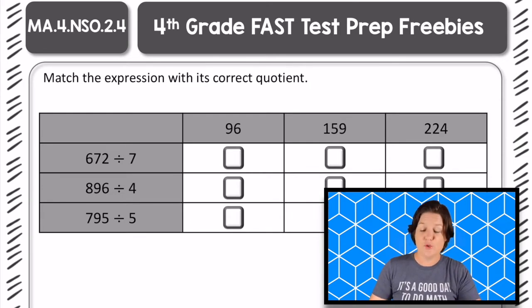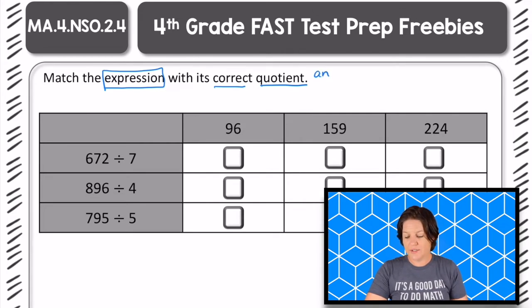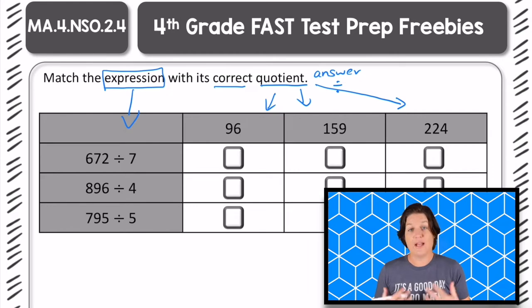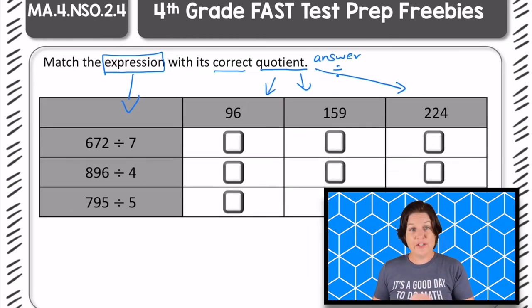Let's go ahead and go over this problem. So it says to match the expression with its correct quotient. So the quotient is the answer when we're using division, and those quotients can be found down here, and we're matching it with the expression. You can see that we don't have an equal sign. We just have an expression. For instance, 672 divided by 7. Those are all expressions. I am going to go ahead and go through these kind of quickly because the purpose of these videos is not to teach you how to divide, but to show you how to use division in this test-taking environment. If you do need more help with division, I definitely encourage you to check out Taking on the Best, where I break down the steps for division.